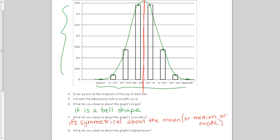Also, what do you observe about the high point of the graph? The high point of the graph would be right here in the middle again. So, also, it's at the middle, which is, again, the mean, the median, or the mode.